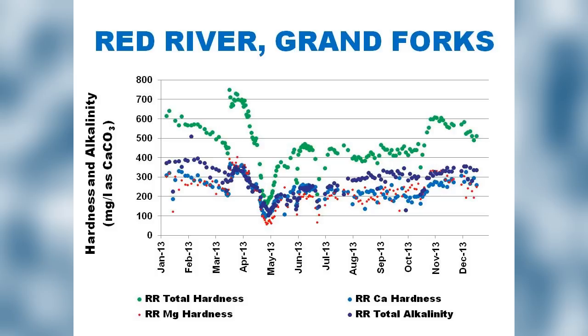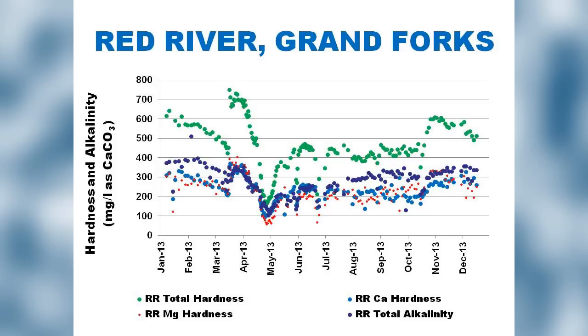Here's the Red River near Grand Forks through 2013. Green is total hardness, purple is total alkalinity, blue is calcium hardness, and red dots are magnesium hardness. This shows the influence of time of year on dissolved inorganic substances. In the spring runoff season, concentration dips to a fairly low value. Experienced operators understand this dip and make adjustments to lime feeds and other treatment parameters to accommodate it. Throughout the rest of summer 2013, things are pretty steady — it's mainly that April/May runoff event when issues occur.